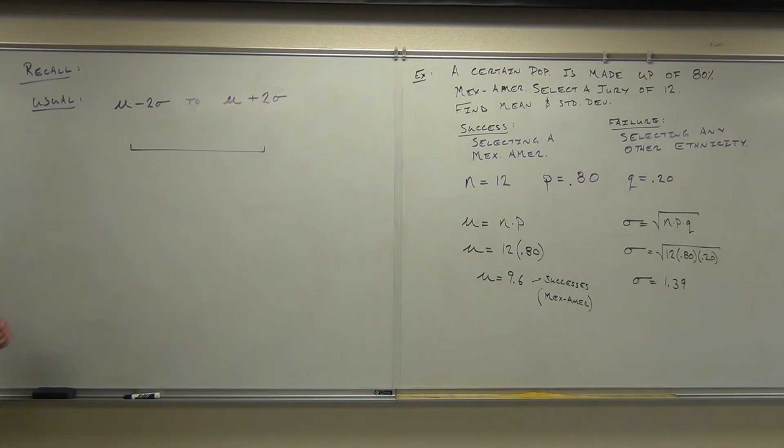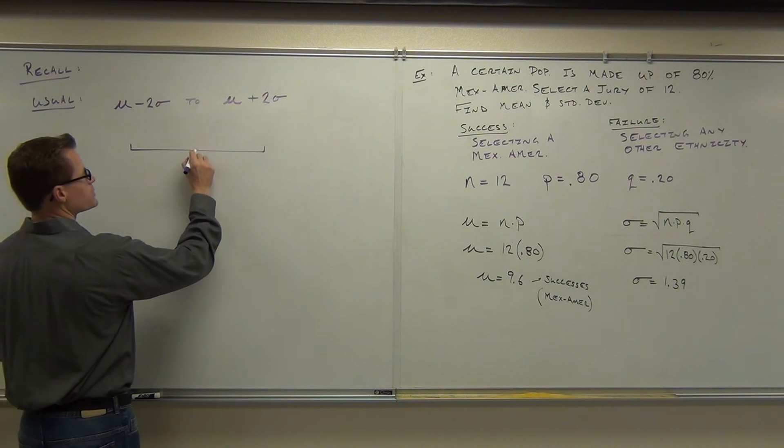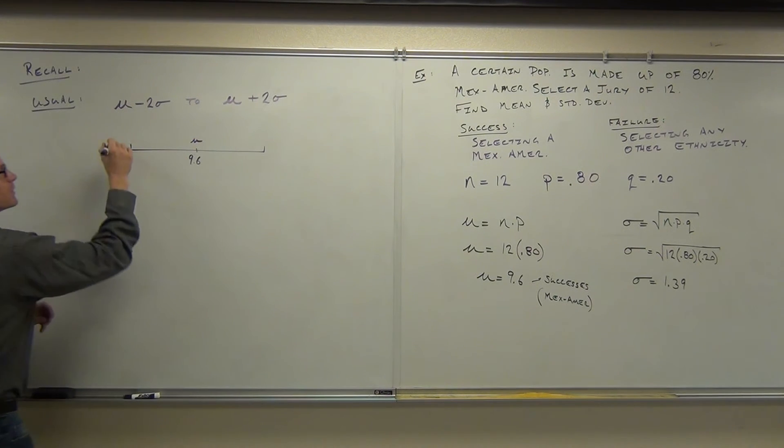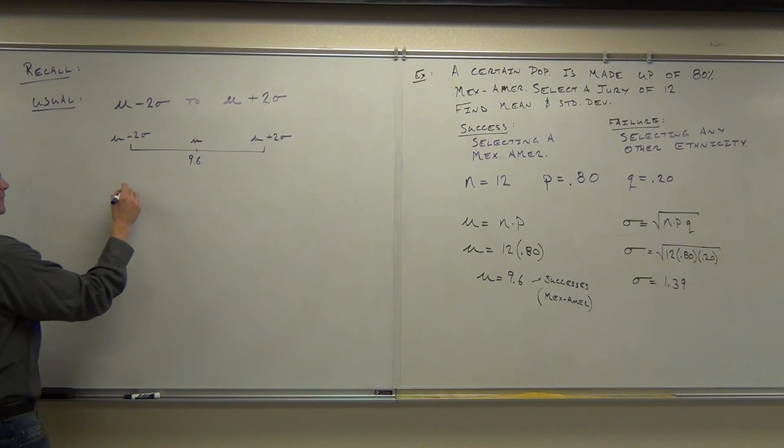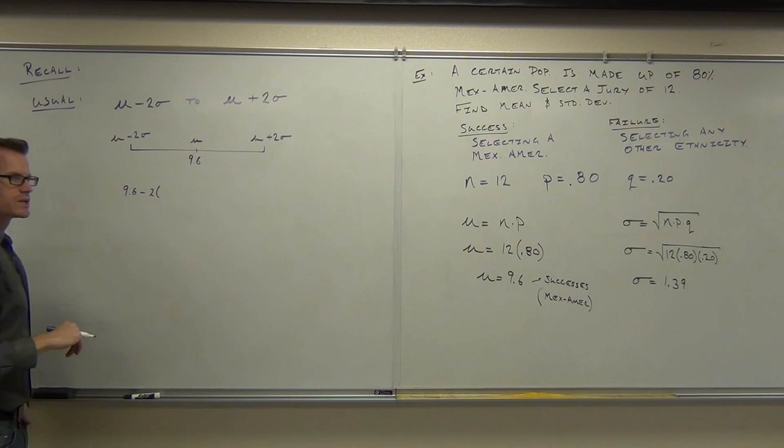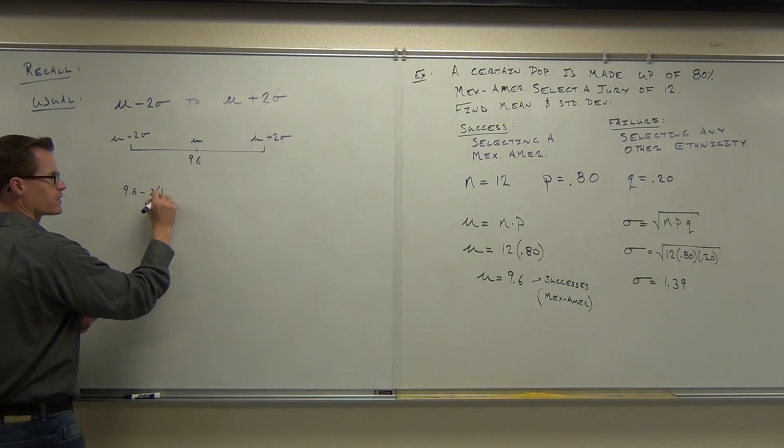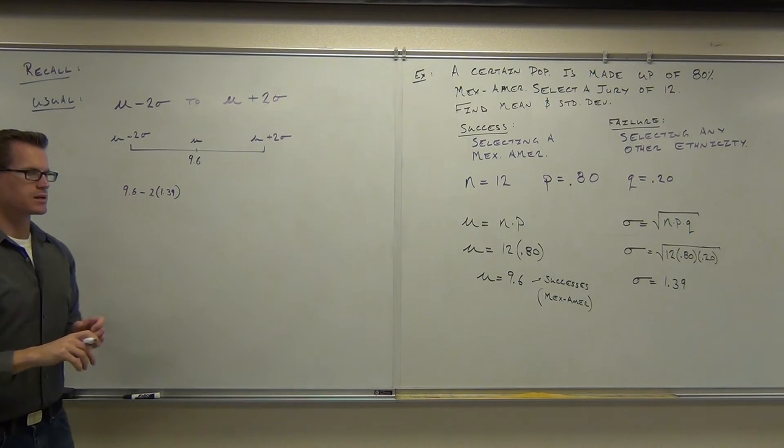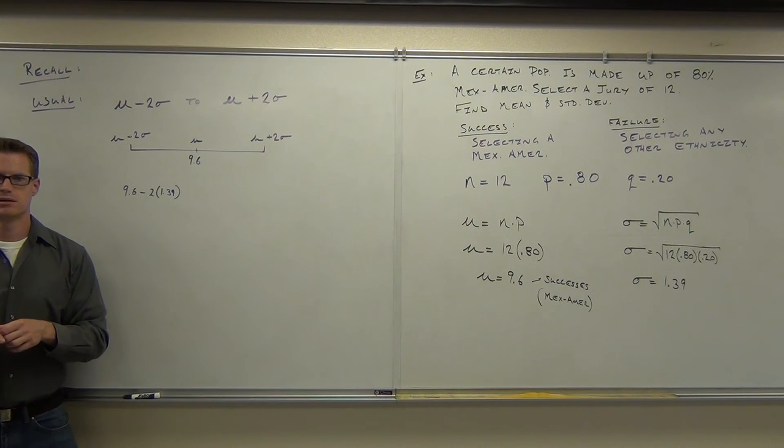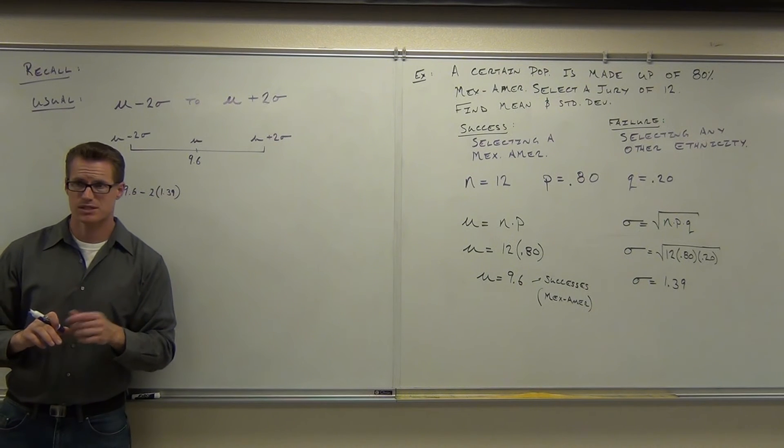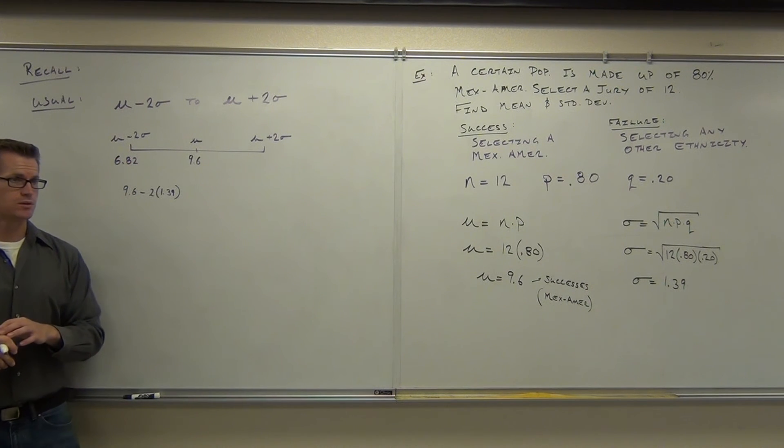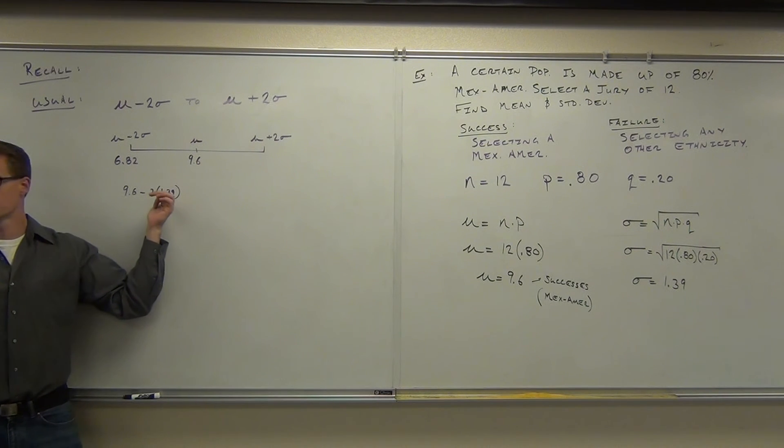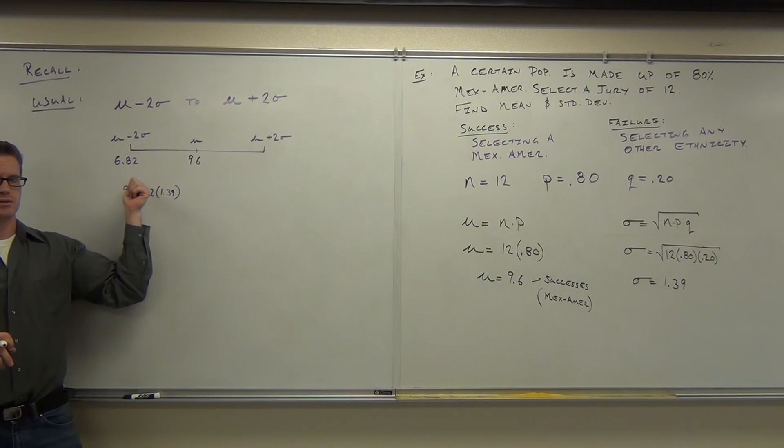To figure out our range, we should get a range of usual numbers. Of course, in the middle is going to be our 9.6. That's our mu. We want the mu minus two sigma. We want the mu plus two sigma. So we'll take 9.6, that's our mean, minus two sigmas. That's two standard deviations of 1.39 each. Can you tell me what is 9.6 minus two times 1.39? 6.82. You're taking your 2 times 1.39. That'll give you 2.78. Subtract that from your 9.6.